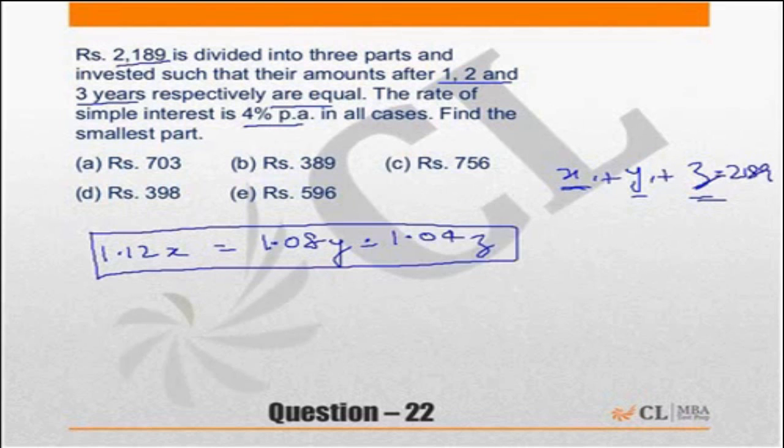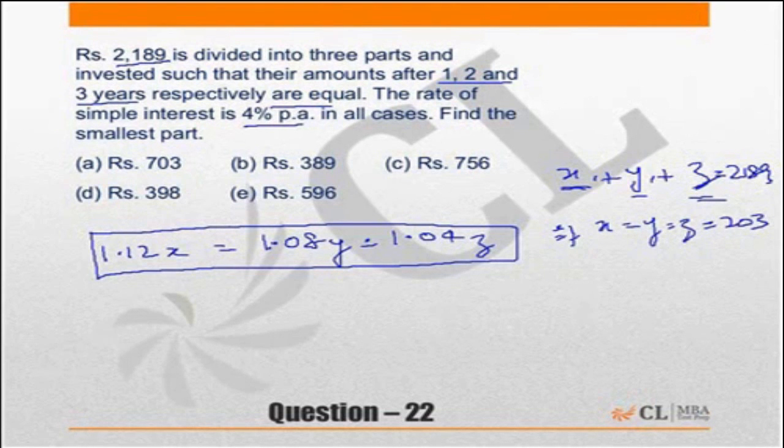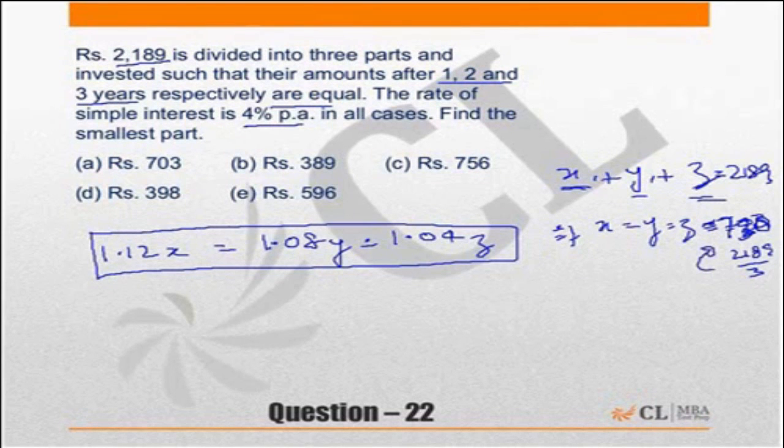The first thing which I want you to understand is that if all 3 of them were equal, if x was equal to y equal to z, then each of them will be equal to 2,189 divided by 3, which is 729.67. So if all of them were equal, they will be approximately 730. So in a way I can say the smallest part has to be lesser than 730.